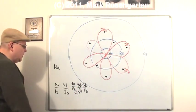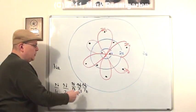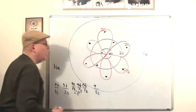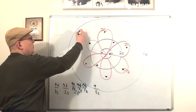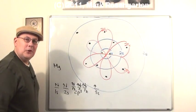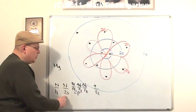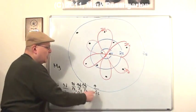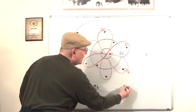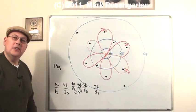Sodium has the configuration 1s², 2s², 2p⁶, 3s¹. So 3s has one electron in it. And magnesium's configuration is 1s², 2s², 2p⁶, 3s². So we get the second electron in that particular s orbital.